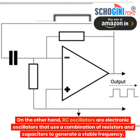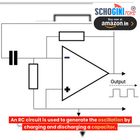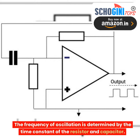On the other hand, RC oscillators are electronic oscillators that use a combination of resistors and capacitors to generate a stable frequency. An RC circuit is used to generate the oscillation by charging and discharging a capacitor. The frequency of oscillation is determined by the time constant of the resistor and capacitor.